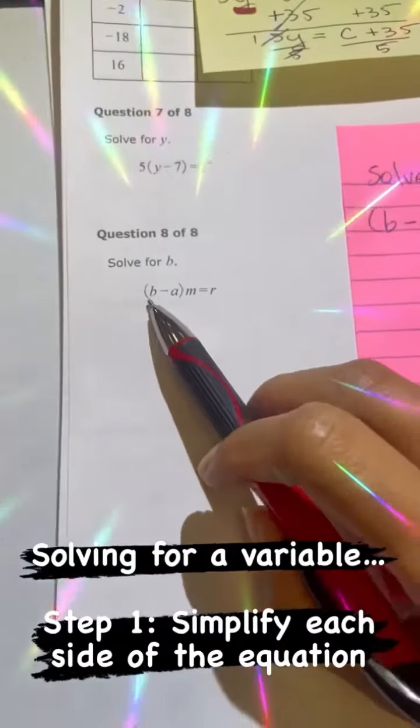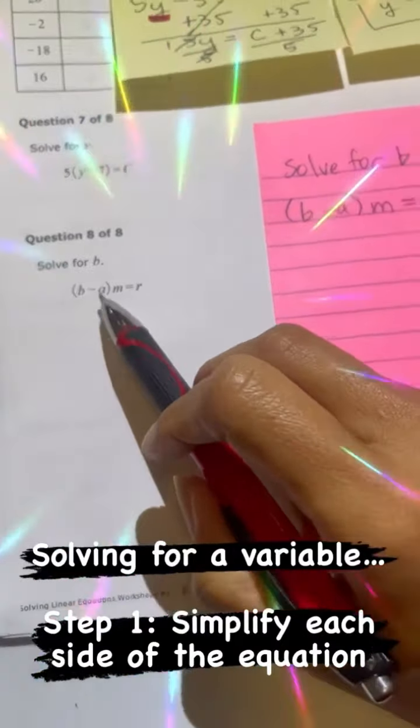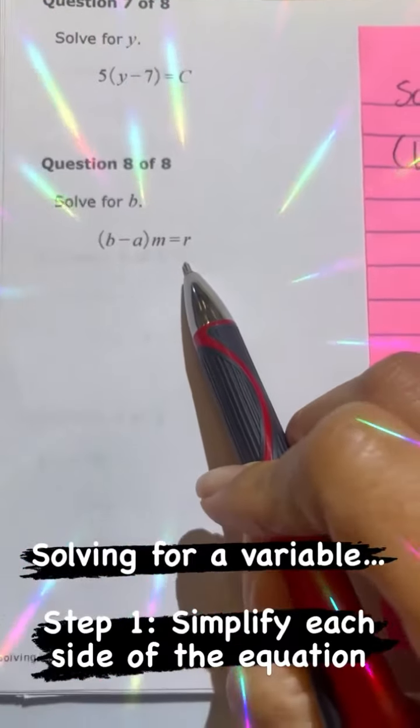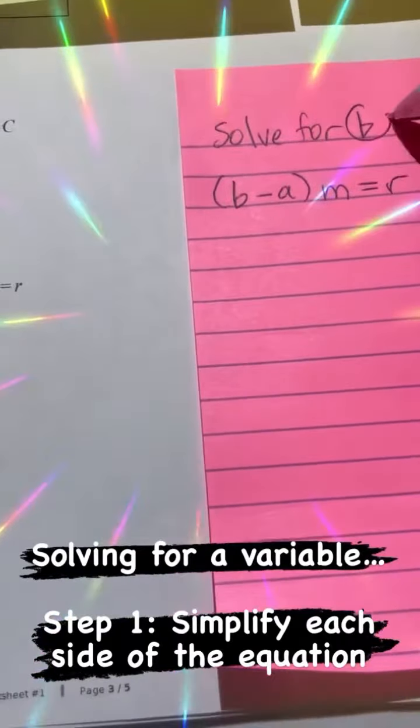Alright, so this problem here says solve for B, if B minus A times M is equal to R. It's going to be the exact same steps as solving for an equation. You want to solve for B.